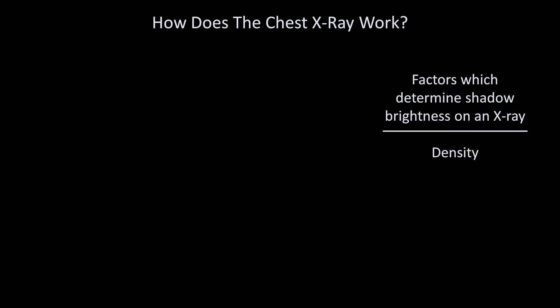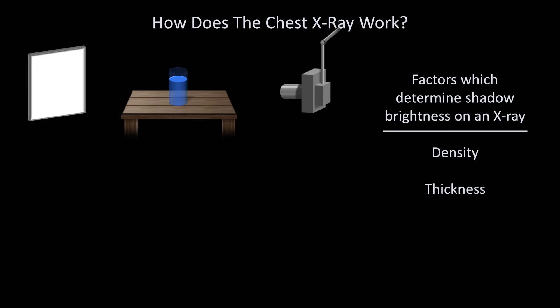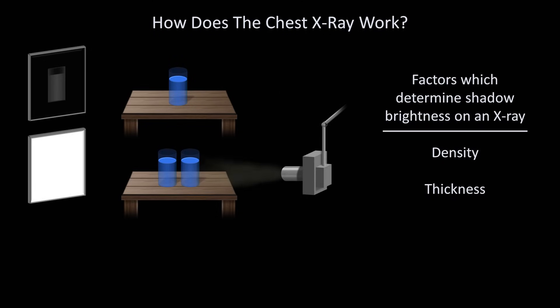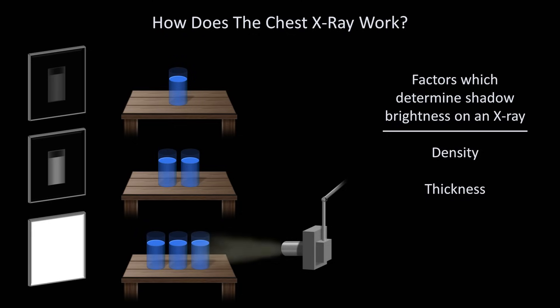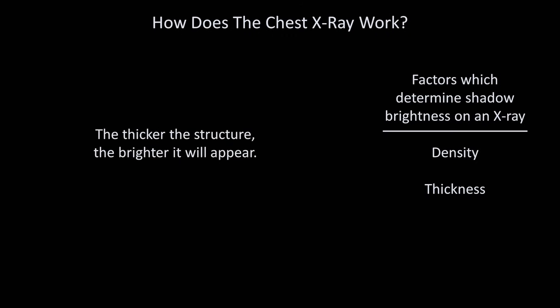The next factor which determines shadow brightness is the thickness of the structure being x-rayed. If we take a single, relatively thin glass of water and expose it to x-rays, most will pass through, resulting in a very dark image on the film. If instead of one glass of water, we line up two glasses in a row and shoot x-rays through both, twice as many will be blocked. The resulting image will therefore be more gray, because the specific part of the film corresponding to the shadow of the glasses have been relatively less exposed. Finally, if we shoot x-rays through three glasses of water, the image of the glass will be brighter still. In summary, the thicker the structure, the brighter it will appear on the x-ray film.